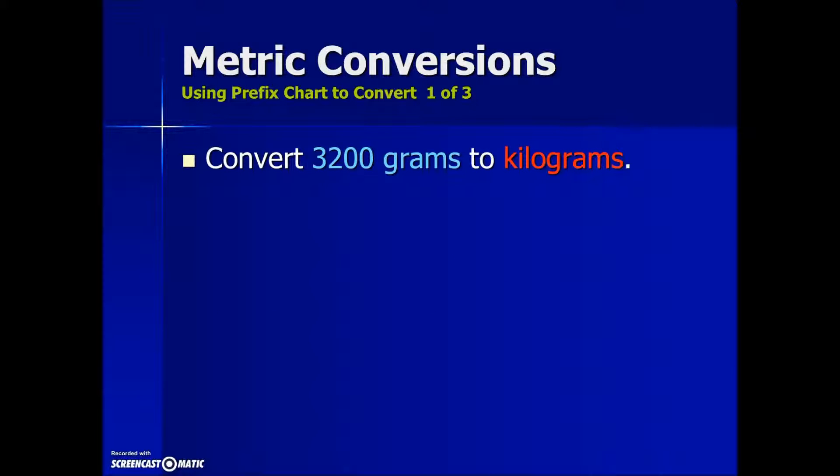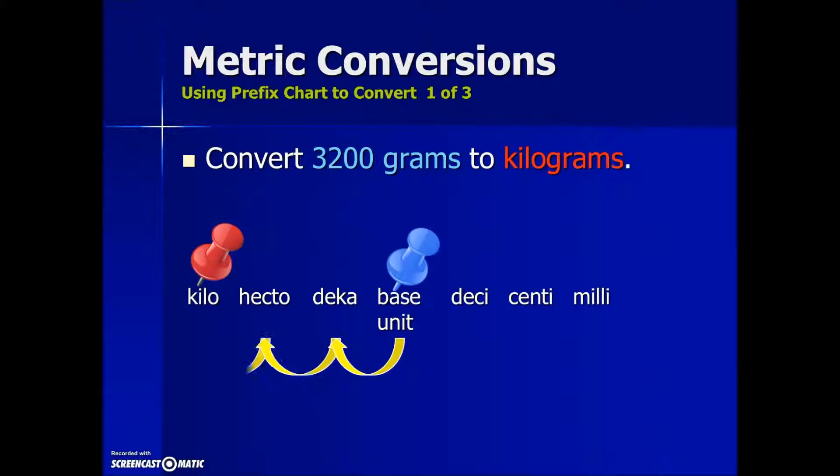The second method is using a shortcut where in this example, we're going to use the prefix chart to do our conversions. We have 3200 grams that we want to convert to kilograms. So here's our conversion chart, which is in the middle column of your conversion table at the top. We are at the base unit. This is where we're starting. We're given grams, so we're going to start our focus there and we're converting it to kilograms, which puts us out here on the far left hand side of our prefix chart.